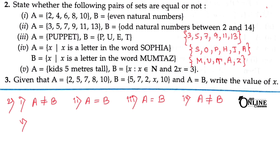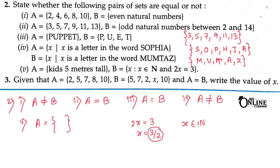Fifth pair: A = {kids 5 meters tall} and B = {x ∈ ℕ : 2x = 3}. Set A is empty because no kid is 5 meters tall. For set B, 2x = 3 gives x = 3/2, which is not a natural number. So B is also empty. Therefore A equals B, as both are empty sets.